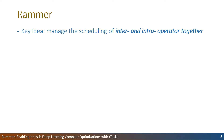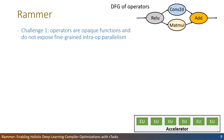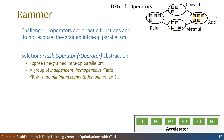To solve these limitations, we present Reimer, a deep learning compiler that takes a holistic approach to manage the scheduling of inter- and intra-operator together. However, there are challenges to achieve this goal. Current operators are opaque functions scheduled by the hardware scheduler and do not expose fine-grained intra-operator parallelism to software. To exploit intra-operator parallelism through a software compiler, Reimer redefines a DNN operator as an R-task operator, or R-operator. It consists of a group of independent, homogeneous R-tasks, where each R-task is a minimum schedulable unit that runs on a single execution unit of an accelerator.